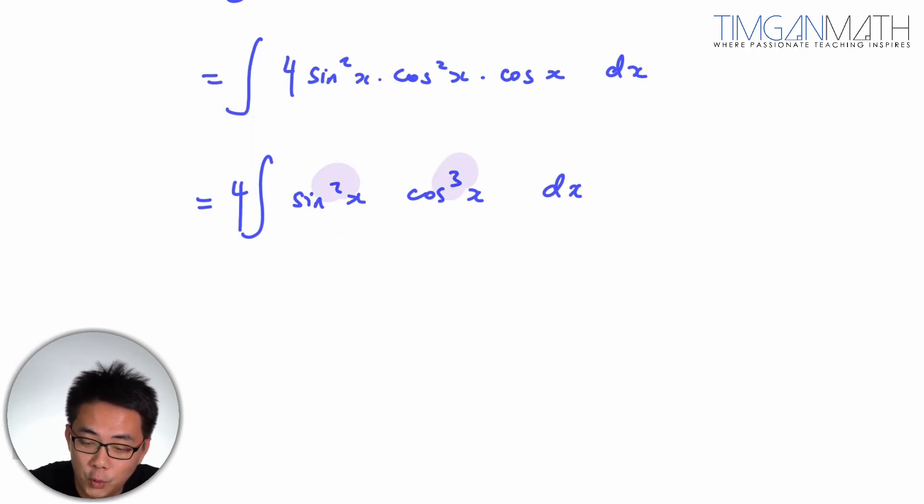So we usually let u, you have to let u be the, if one is odd and one is even, you let u be the one which is odd, I mean even. So let u equals to sine x. Okay, I'll explain to you why.